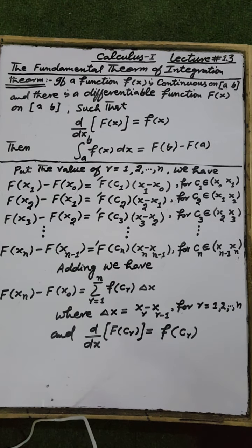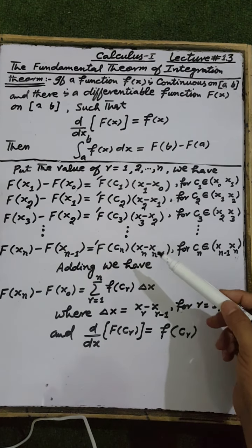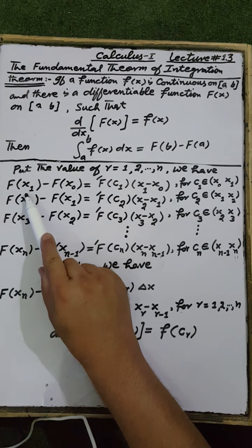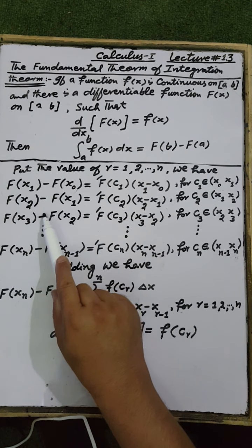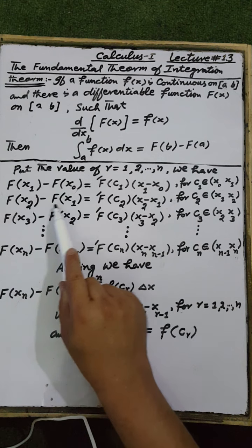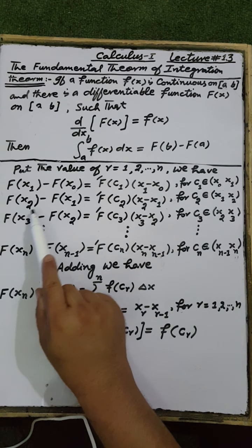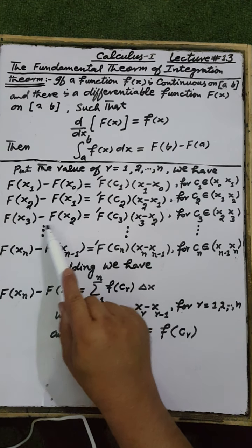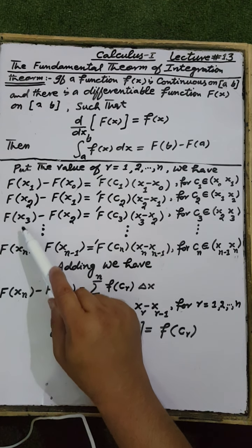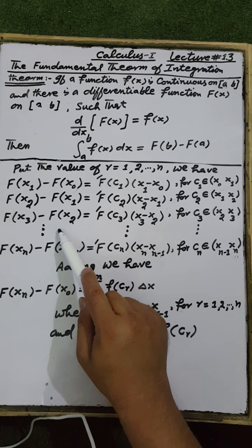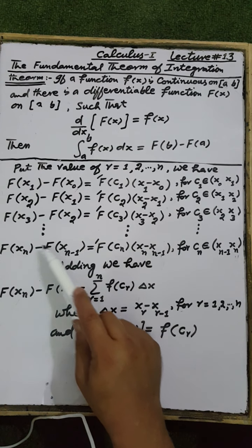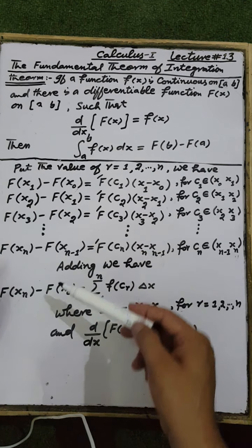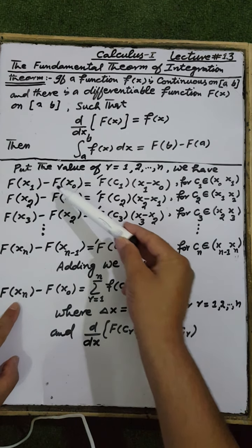Adding all these terms together, on the left-hand side there is telescoping cancellation: F(x₁) cancels with the F(x₁) in the next equation, the first term of each step cancels the second term of the next, and so on. After this telescoping cancellation, the left-hand side reduces to F(xₙ) minus F(x₀).